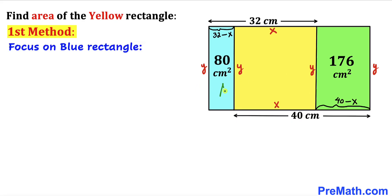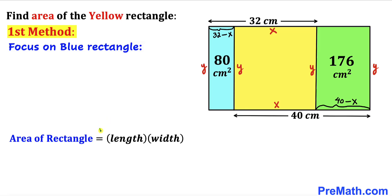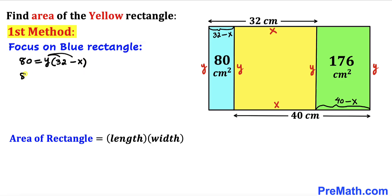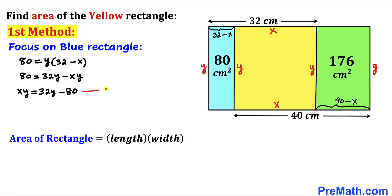Let's focus on the blue rectangle and recall the area of rectangle formula: Area equals length times width. For this blue rectangle, our length is y and our width is 32 minus x, and its area is 80. So we can write: 80 equals y times (32 minus x). Distributing gives us 80 equals 32y minus xy. Moving xy to the left and 80 to the right, let me call this Equation 1.